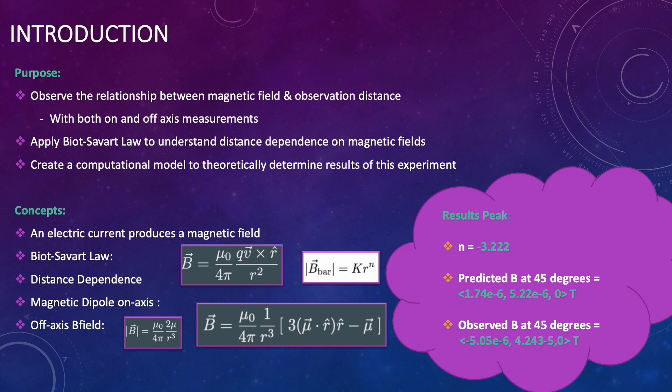Important concepts include the concept of magnetic field which is produced by a magnetic current, the Biot-Savart law which calculates the magnetic field of an object observed at a distance r with some magnetic dipole moment mu, the magnetic dipole moment formula, and on and off axis magnetic field formulas.